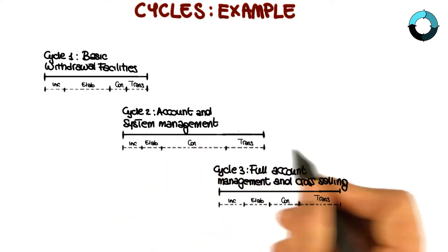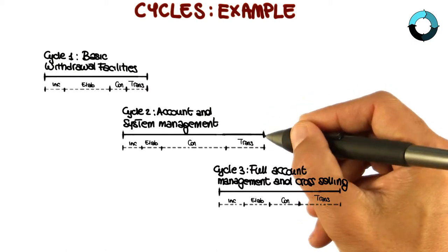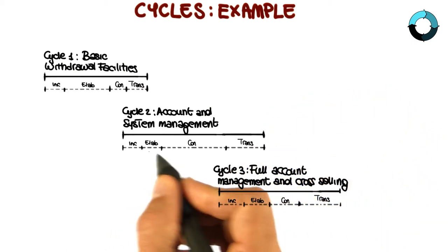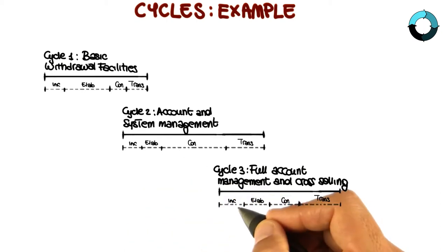Similarly to cycle one, these cycles will also produce a product both at the end of the cycle and within the cycle in the different phases. And there's a few more things to note.